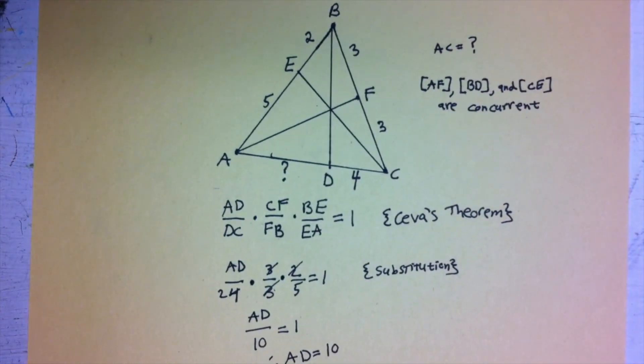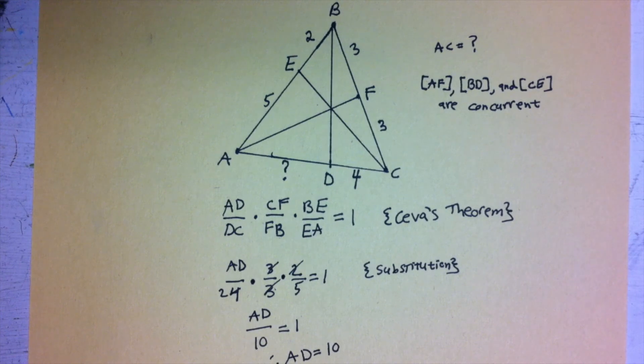And so that's just an example of how to use Ceva's Theorem in order to solve a problem involving a missing length on the side of a triangle.